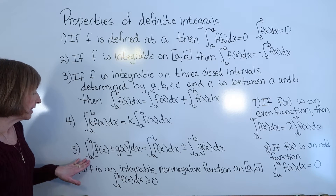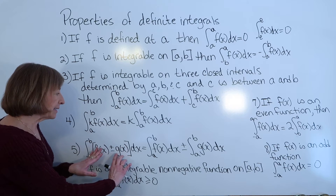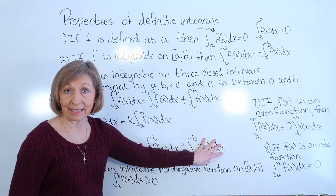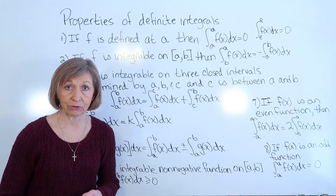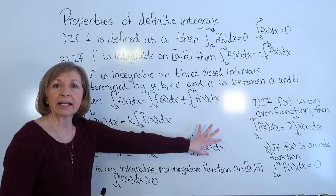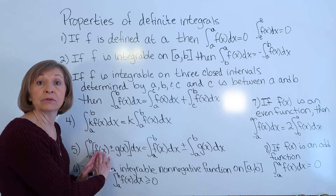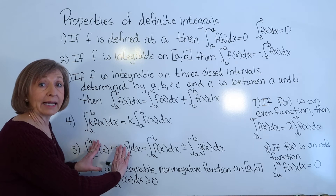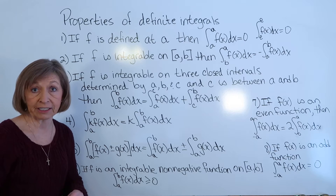Property 5: the definite integral from a to b of an addition or subtraction of two functions equals the definite integral of the first function added or subtracted to the definite integral of the second function. You can do definite integrals term by term. This applies to multiple terms, not just two. Remember, this is only for adding or subtracting — we don't have this property for multiplying or dividing functions.